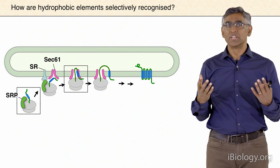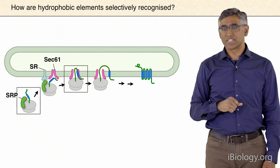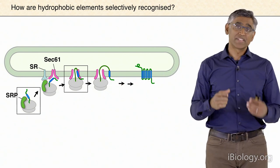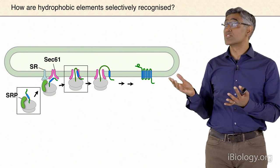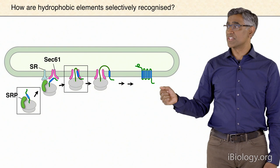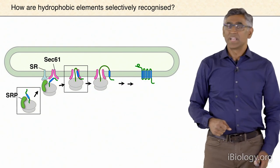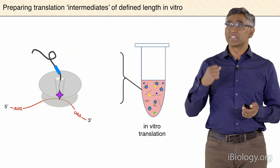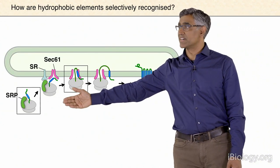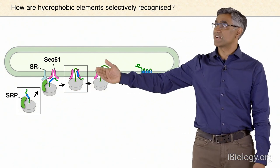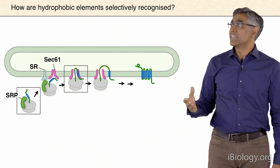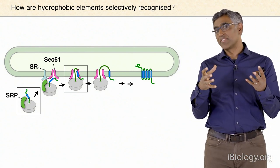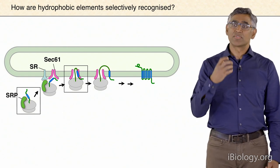Nevertheless, this told us it was possible to start seeing, at atomic or near-atomic resolution, details of not only the ribosome but also of the SEC61 complex. We could then turn our attention to other problems. We, as well as others, have used such methods to look at intermediates in translation, intermediates in quality control processes of the ribosome, and—what we're interested in here—intermediates in the translocation process. The question is: what do intermediates of SRP interacting with the signal, or SEC61 interacting with the signal, look like?